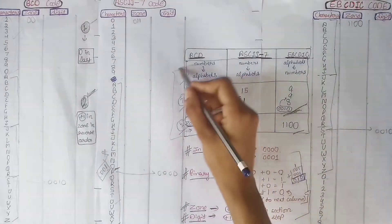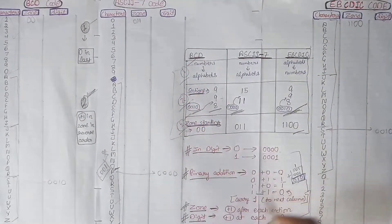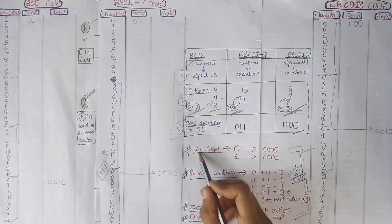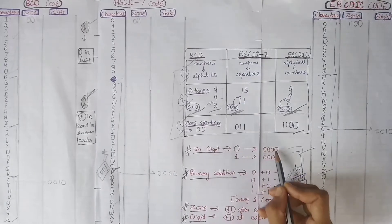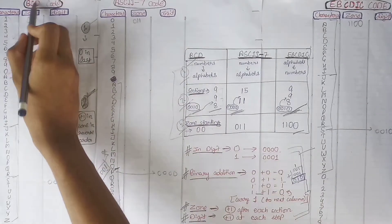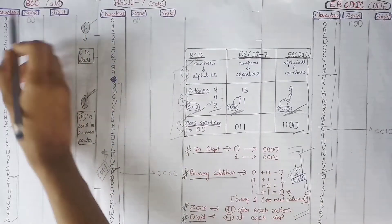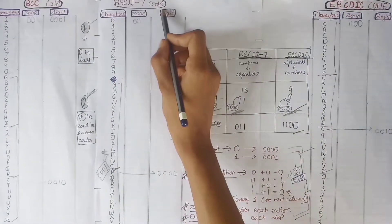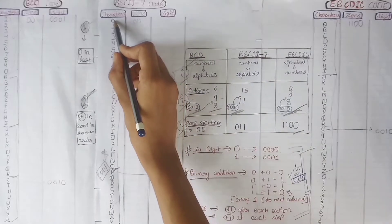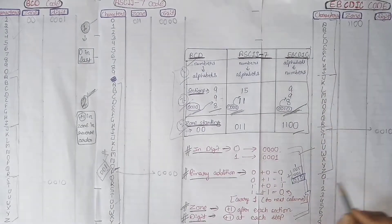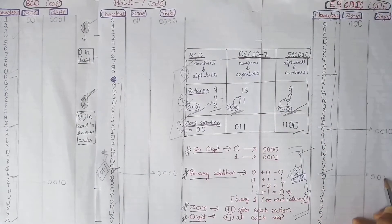Now we have learned all three basic tricks and we just have to use these basic rules to complete these codes. In the digit area, in front of 0 we write 0000, and in front of 1 we write 00001. Since in BCD code numbers start from 1, in the digit area we write 00001. In ASCII code numbers start from 0, so we write 0000. In EBCDIC code numbers also start from 0, so we write 0000.